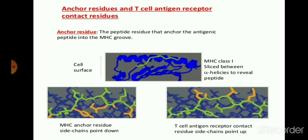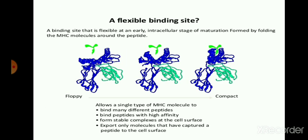Then they trigger the formation of cytokines and chemokines by triggering the T cytotoxic cell, which eliminates the antigen from the body of the organism. Basically this MHC molecule shows flexibility for the antigen binding site. The binding site — that is, alpha 1 and alpha 2 of MHC class 1 — is flexible at an early and intracellular stage of maturation, formed by the folding of the MHC molecule around the peptide. This flexibility depends on the structure of the peptide secreted by the antigen.